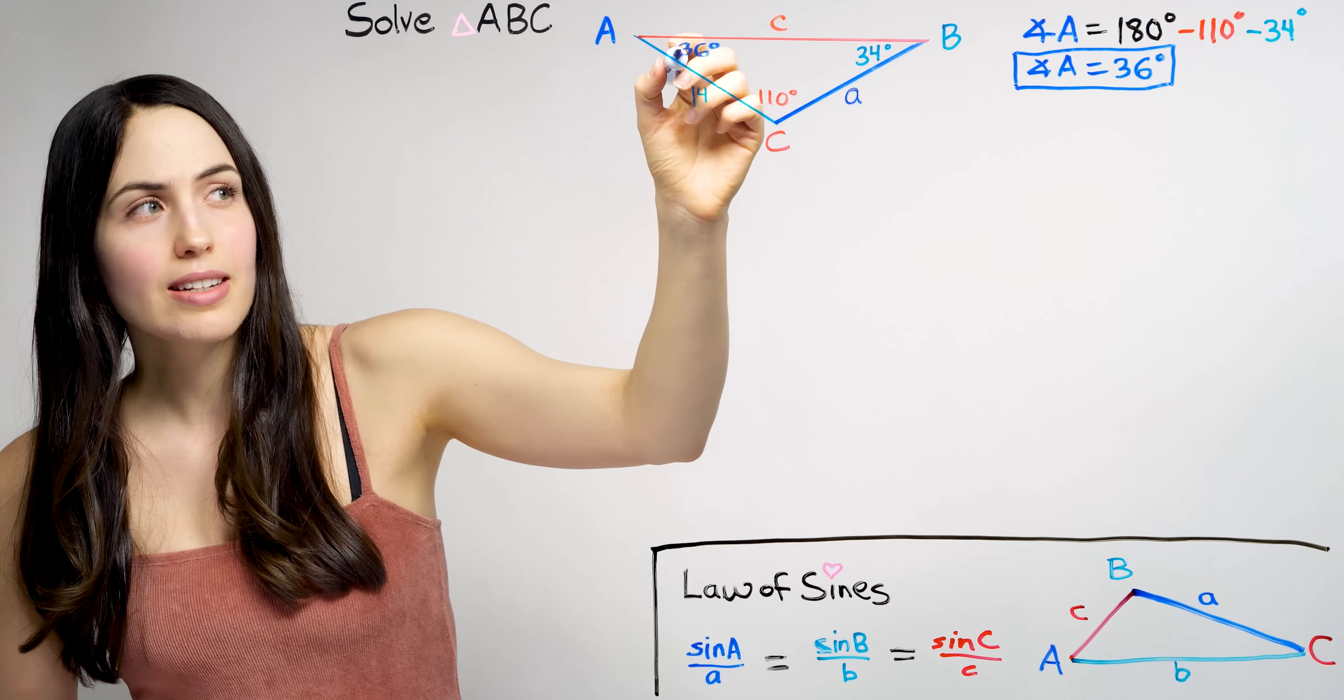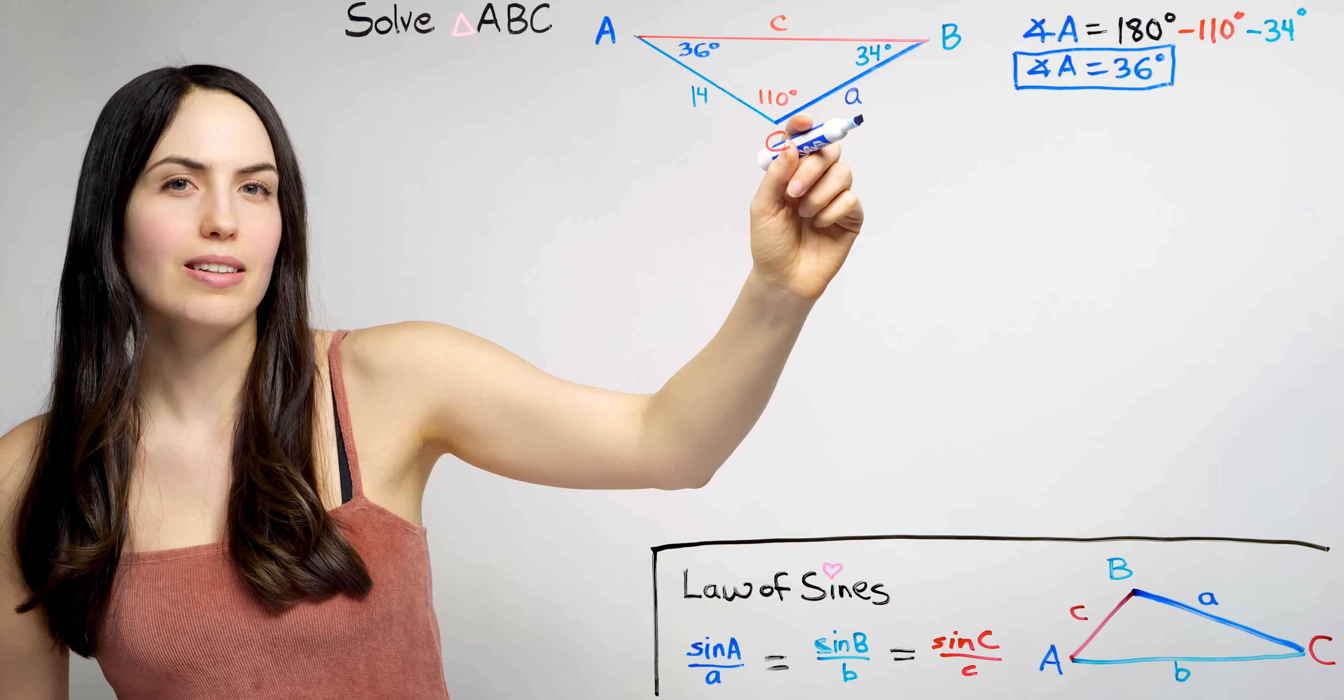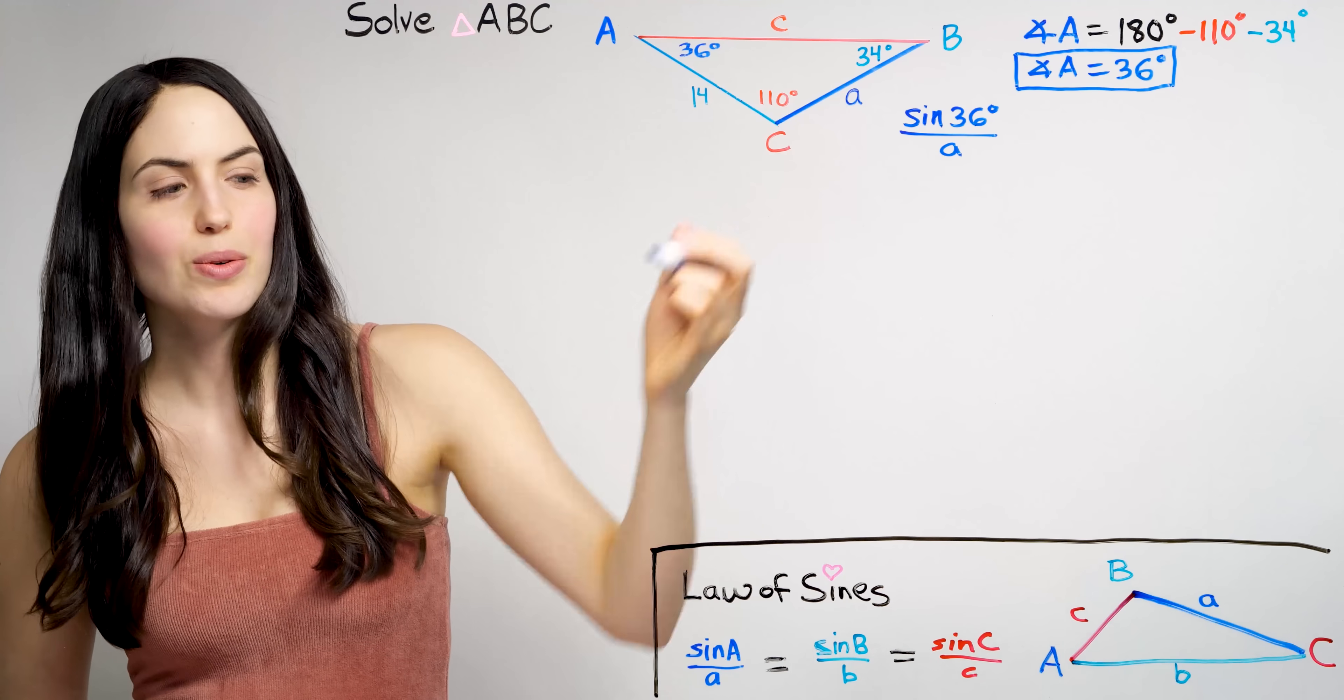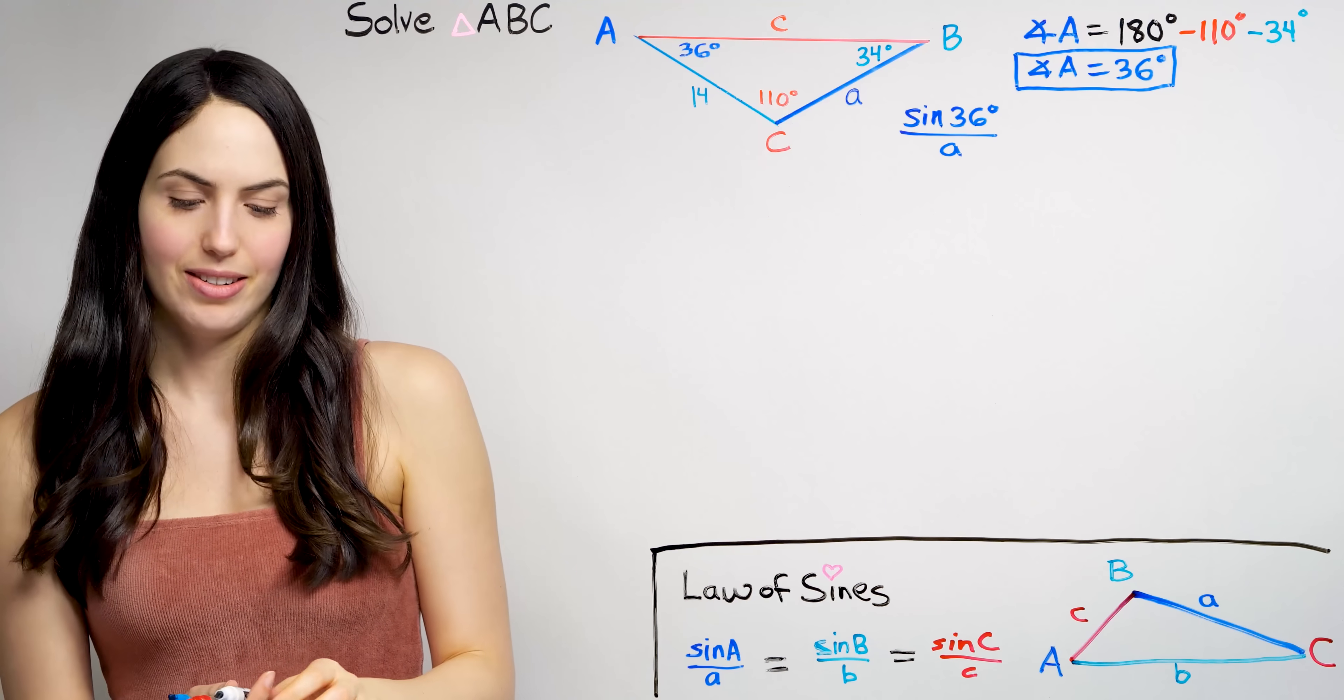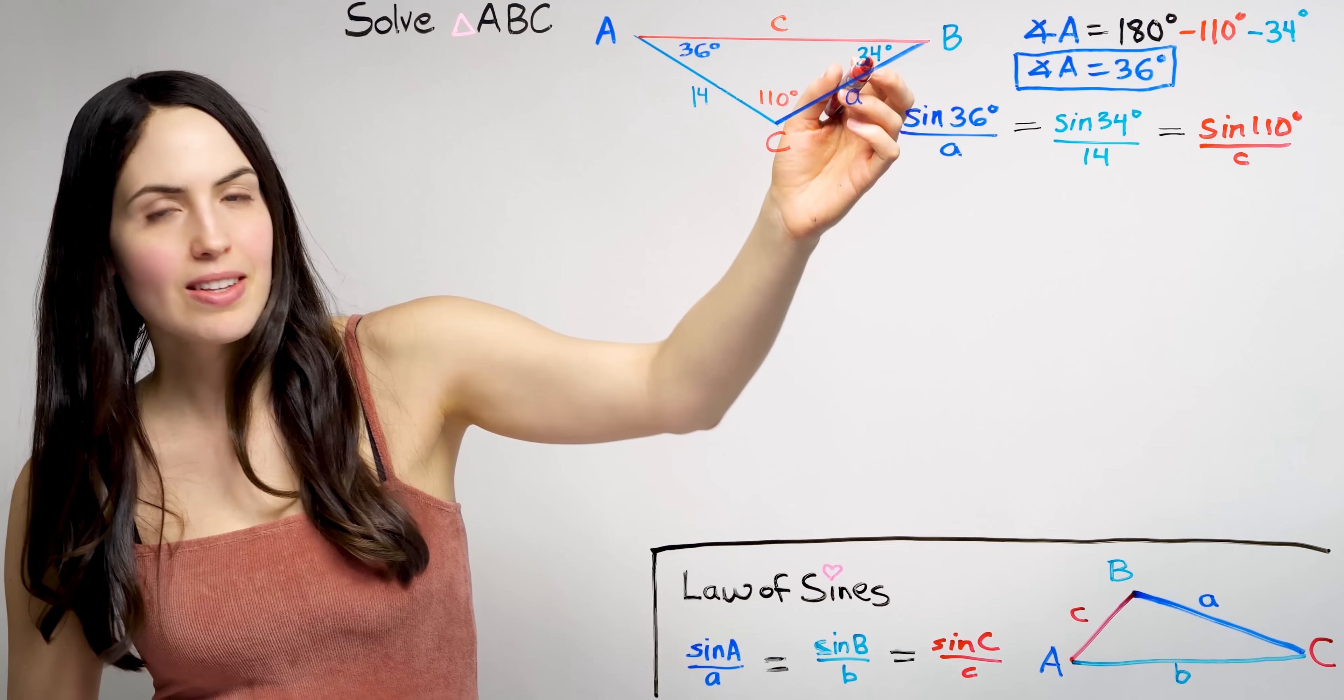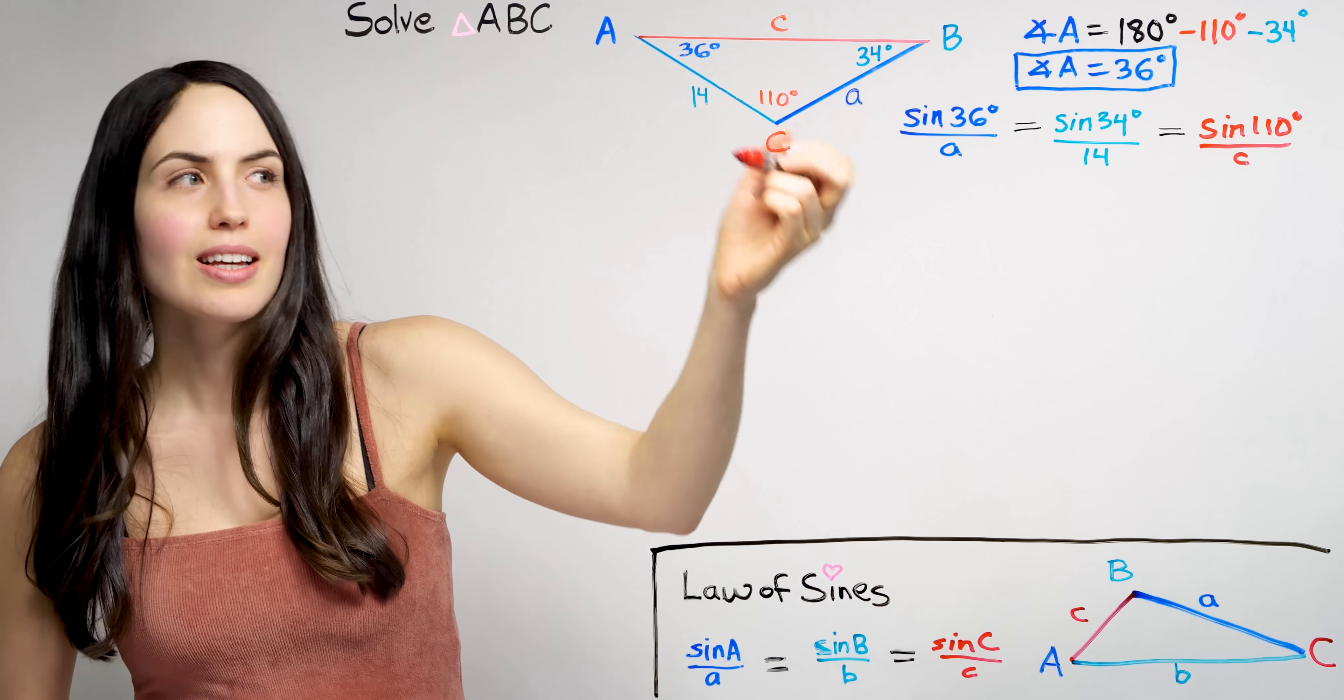I can start with A. So sine of 36 degrees over an opposite side that we don't know yet, so we can call it lowercase a. So that equals sine of the next angle over its opposite side.